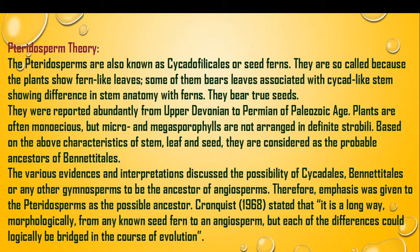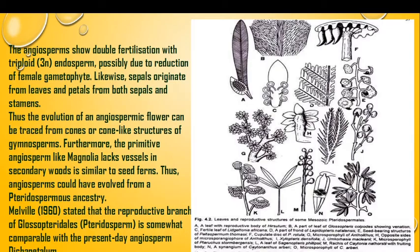Emphasis was given to pteridosperms as the possible ancestor. Cronquist in 1968 stated that it is a long way morphologically from any known seed fern to an angiosperm, but each of the differences could logically be bridged in the course of evolution. The pteridosperms resemble seed ferns and also resemble cycads, and are interrelated with angiosperms, thus becoming an ancestor of angiosperms.